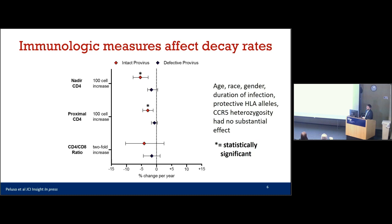The second primary result is that the rate of decline during the first seven years on ART correlates with various immunologic measures. The figure shows the CD4 nadir, the CD4 count at the beginning of therapy, and the CD4 to CD8 ratio, a marker of immunologic health. For all of these measures, there is a correlation between the robustness of the immune system and the rate of change in the intact reservoir size. Parameters like age, race, gender, and duration of infection had no substantial effects on the rate of change.